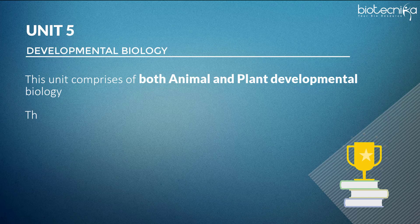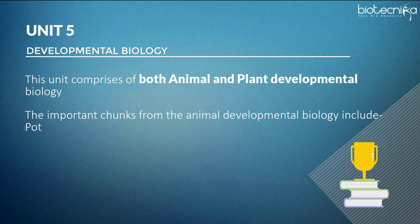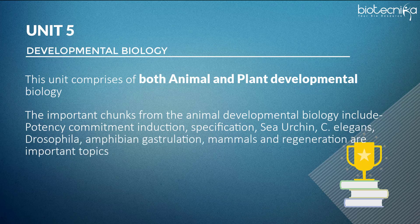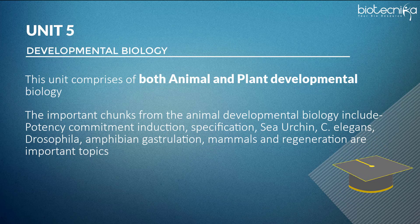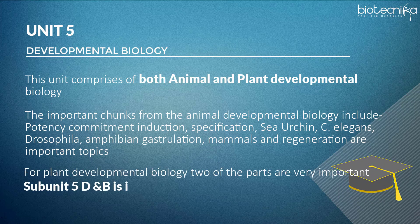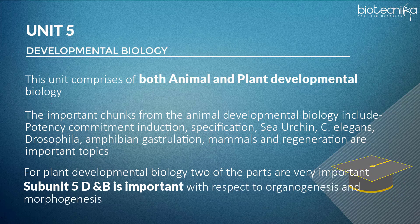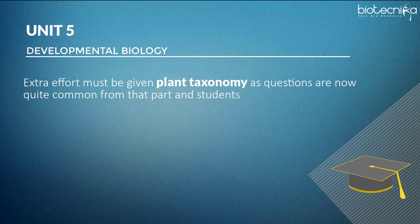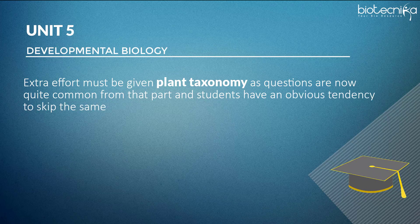Unit 5 — Developmental Biology: This unit comprises both animal and plant developmental biology. Important chunks from animal developmental biology include potency, commitment, induction, specification, sea urchin, C. elegans, Drosophila, amphibian gastrulation, mammals, and regeneration. For plant developmental biology, subunits 5D and 5B are important with respect to organogenesis and morphogenesis.